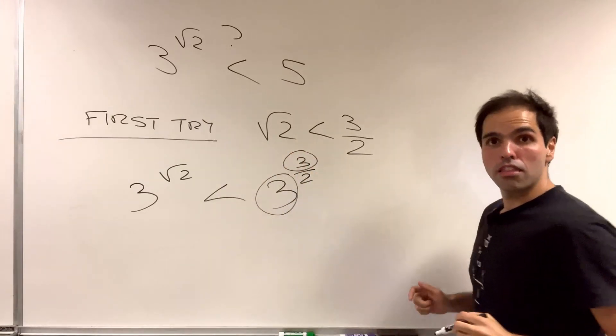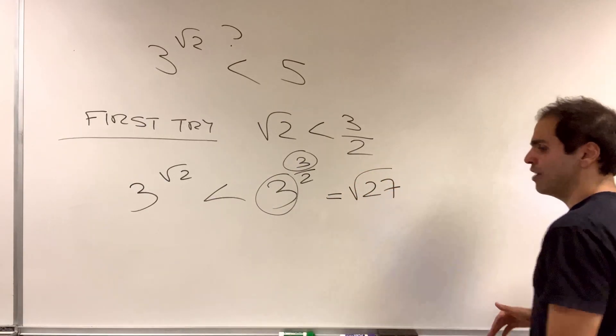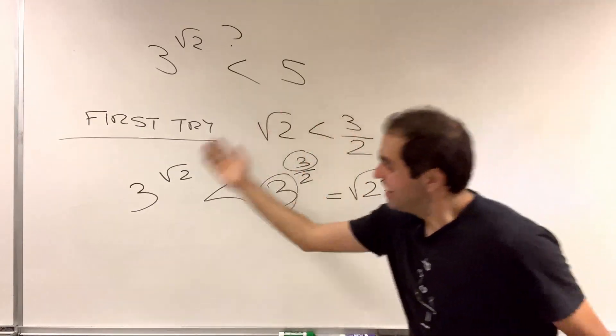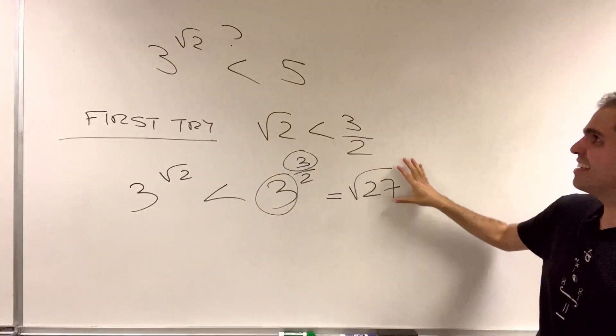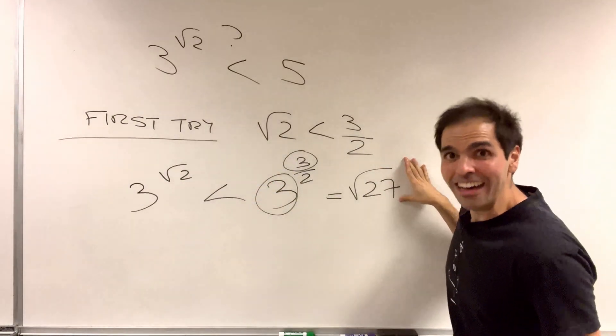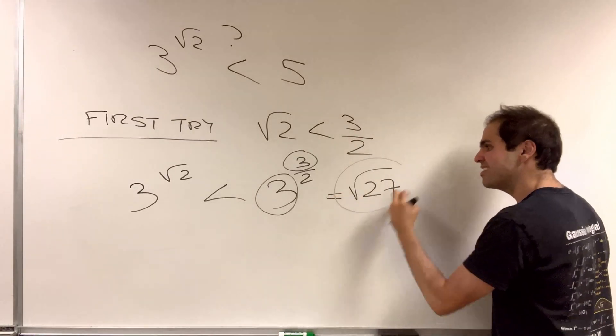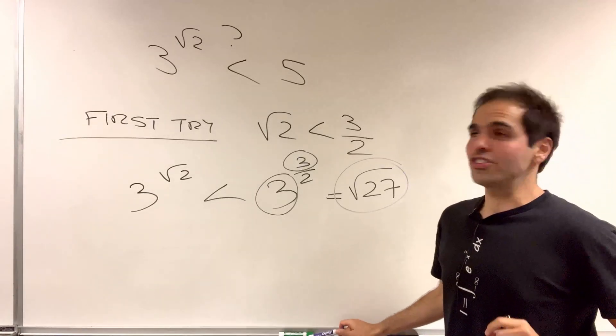But 3 to the 3 halves, that's 3 cubed, so that's square root of 27. Oh, darn it! What we would like is that 3 to the square root of 2 is less than square root of 25, which would give us 5. But here we have 27, which is a little bit of an overshoot.